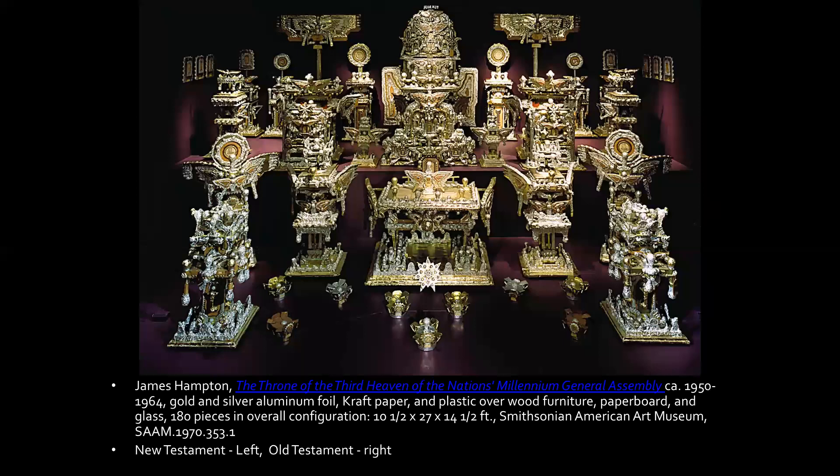When you look at the materials, Hampton didn't have any art training, so he used what he could get his hands on: gold and silver aluminum foil, craft paper and plastic over wood furniture, and paper board. As the description says, it's 180 pieces in the overall configuration, organized as shown in the picture — you'll see them displayed that way sometimes.